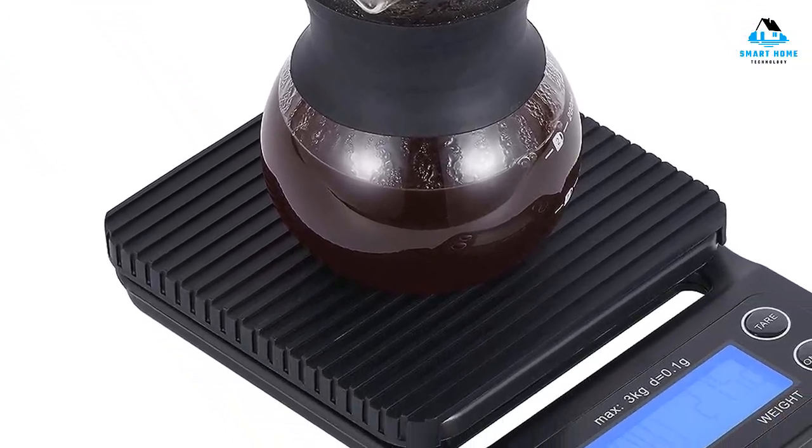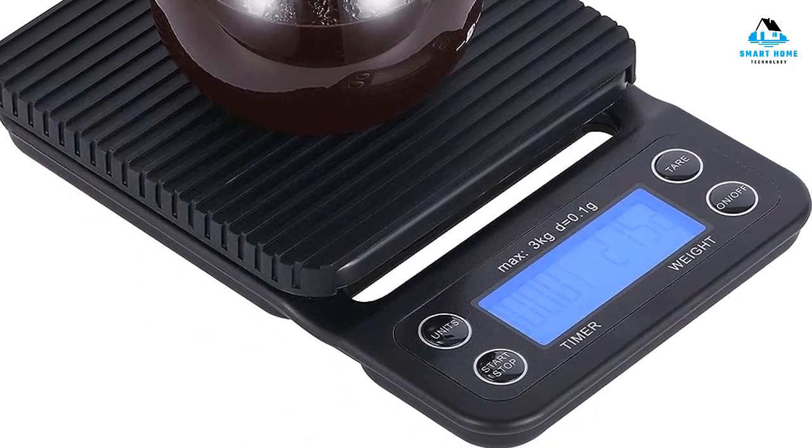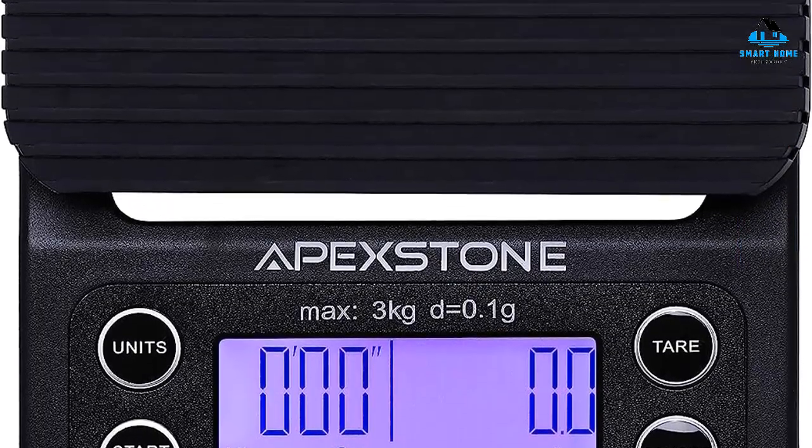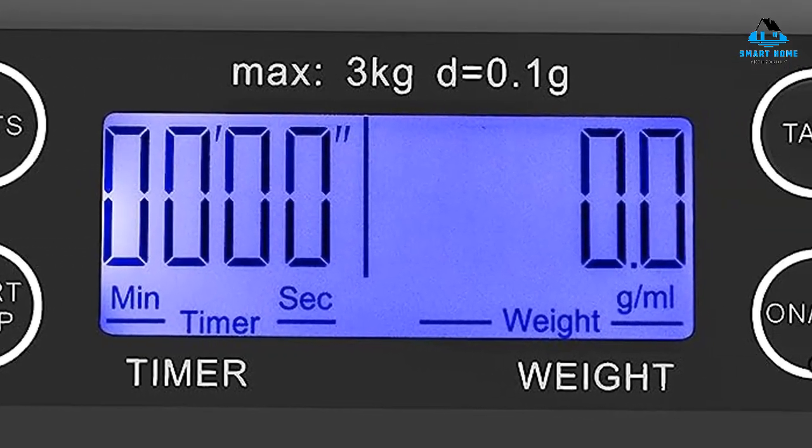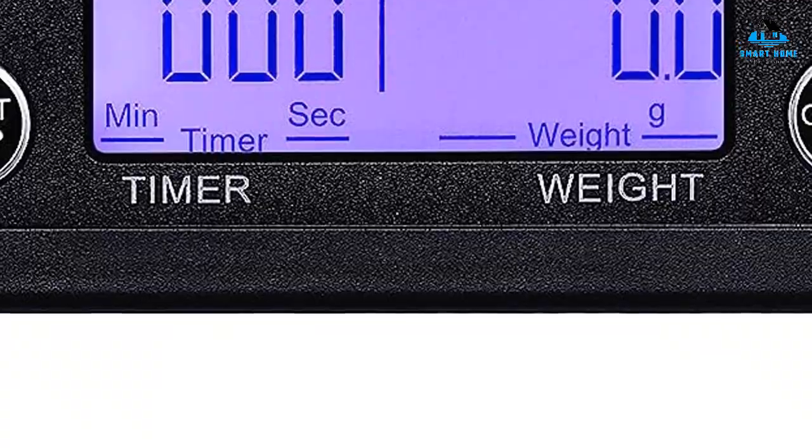This scale also comes with a silicone mat, which protects the device from heat or spilled liquids. The mat is easily removable to clean off between uses. The LCD has either a blue or green backlight, making it easily readable and shows the unit switch function, timer, low battery indicator, auto-off function, and tare function.